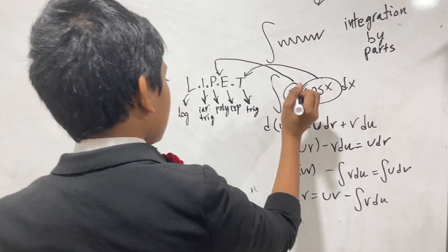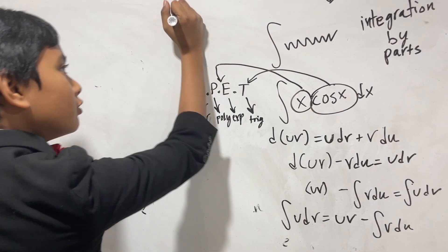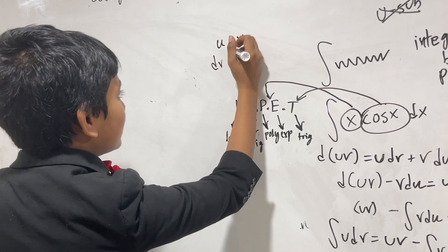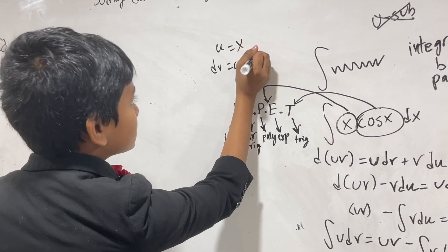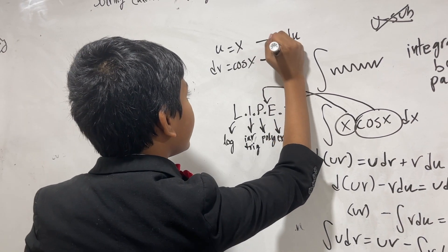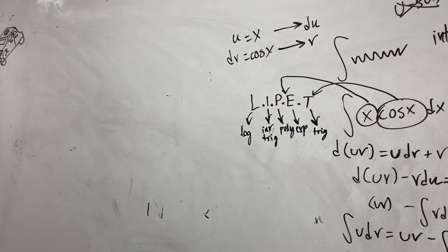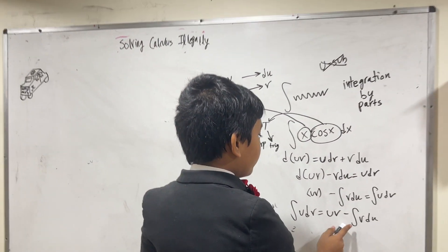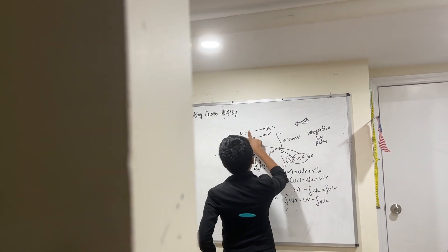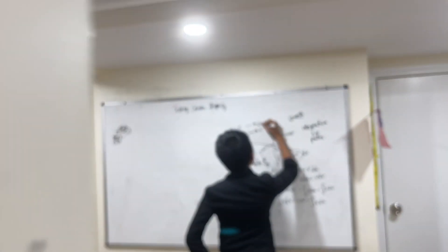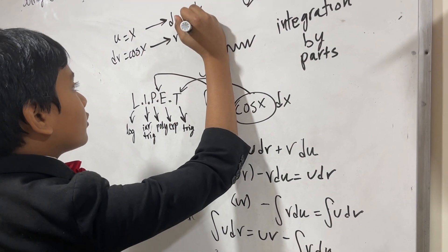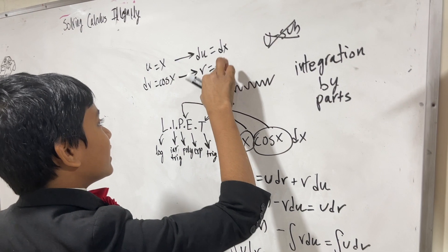That means that we are going to make u into x, and dv is cosine x. We have to now find the derivative of u and the original part of v for this to work. Taking the derivative of x is just 1 times dx, and taking the integral of v here gives you, well, the integral of cosine x is sine x.